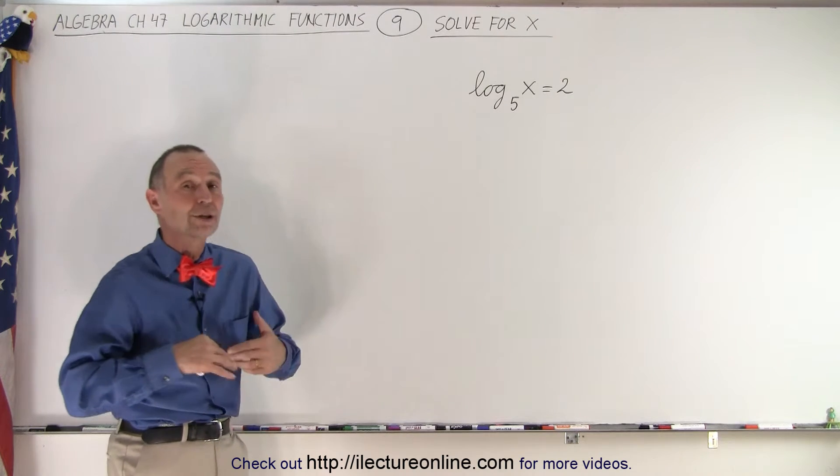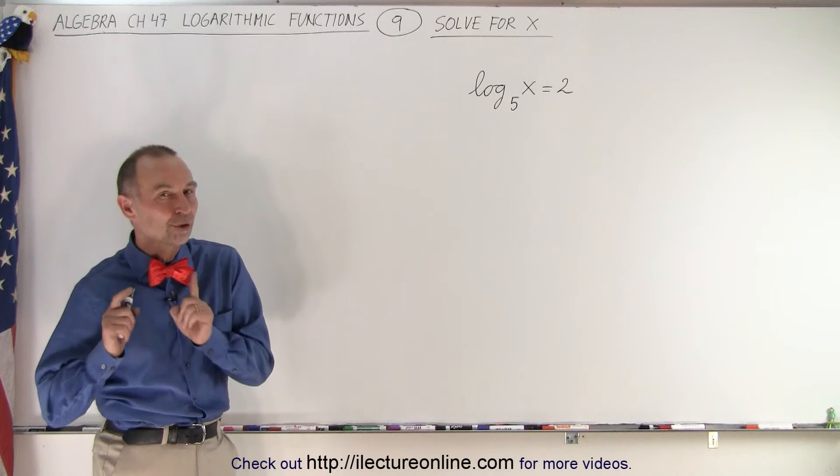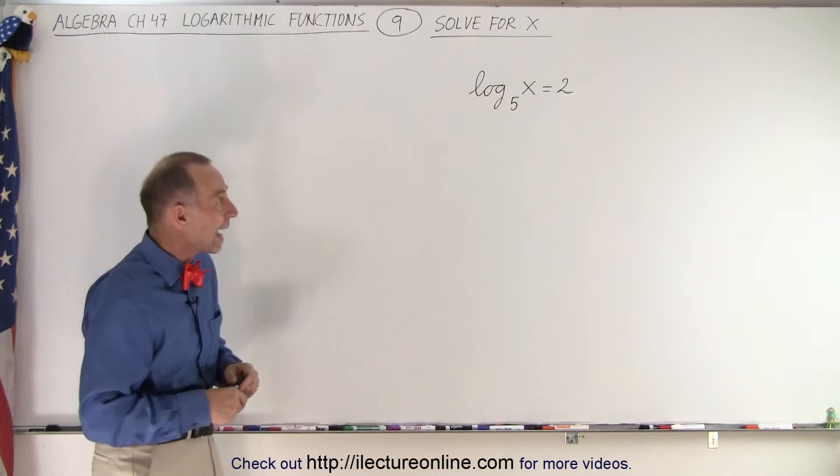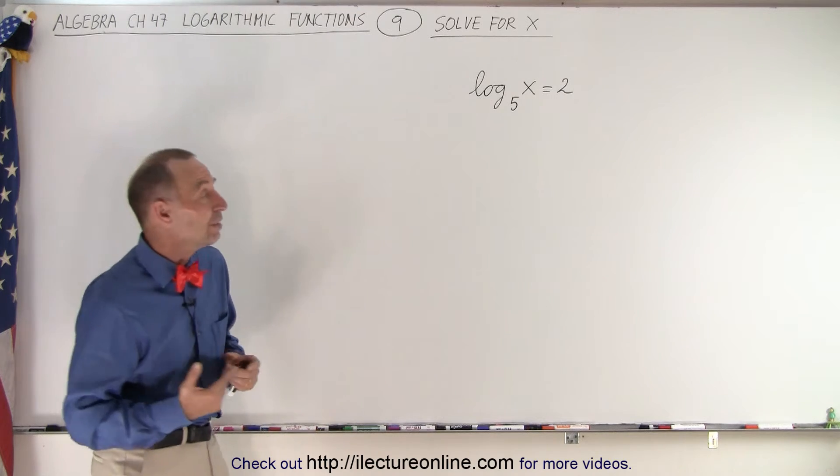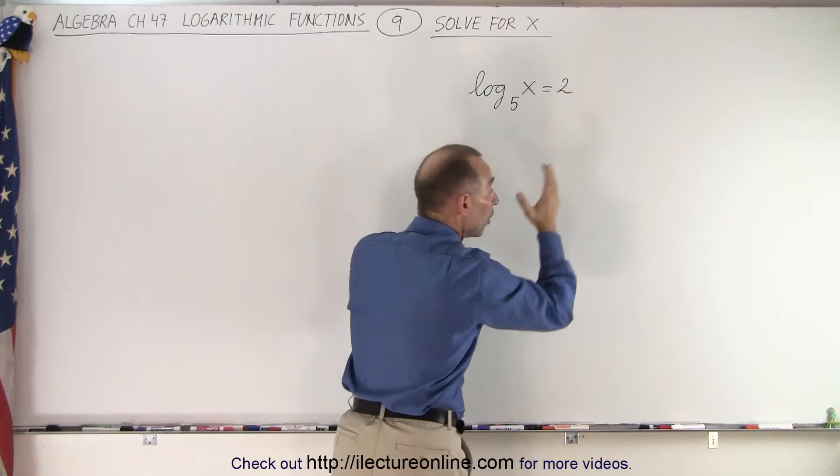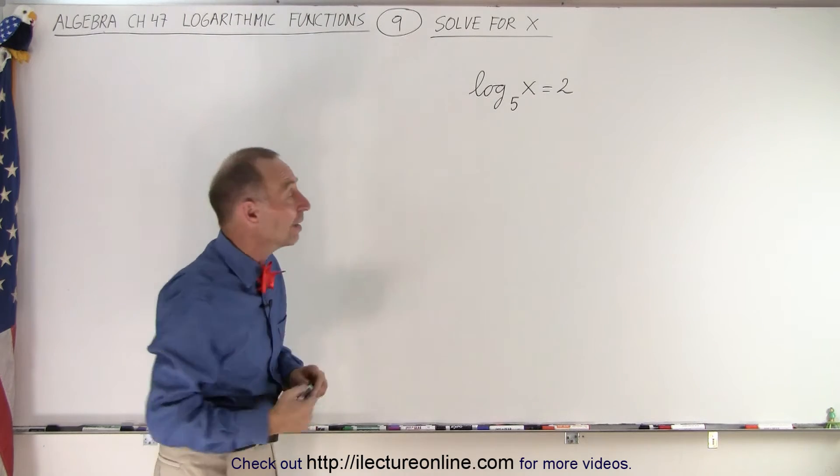Well, it turns out in this case we want to convert it to exponential form, which means we have to use the anti-log technique. We're going to take the anti-log of both sides, which means we're going to raise the left side and the right side as the exponent of the base of the logarithmic function, which is 5.